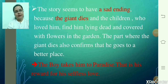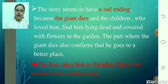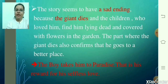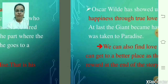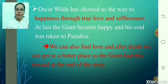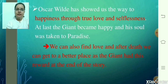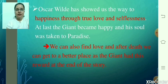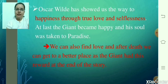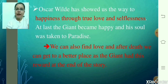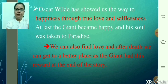The story seems to have a sad ending because the giant dies and the children who loved him find him lying dead and covered with flowers in the garden. However, it also confirms that he goes to a better place after death — the little boy takes him to paradise as his reward for his selfless love. Oscar Wilde has shown us the way to happiness through true love and selflessness. Love has all the power, and after death we can get to a better place if we have love in our hearts for others. The giant received his reward at the end of the story as he was taken to paradise because he had developed love for the children.